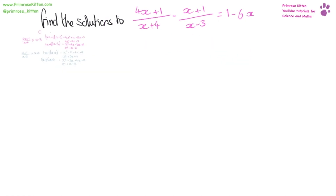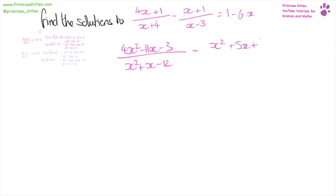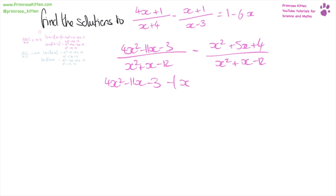So what we now have is four x squared minus 11x minus three, over x squared plus x minus 12, minus x squared plus five x plus four, over x squared plus x minus 12. Now, because we have the same things on the bottom, we can just minus the things on the top, so what we have is four x squared minus 11x minus three, minus x squared plus five x plus four.